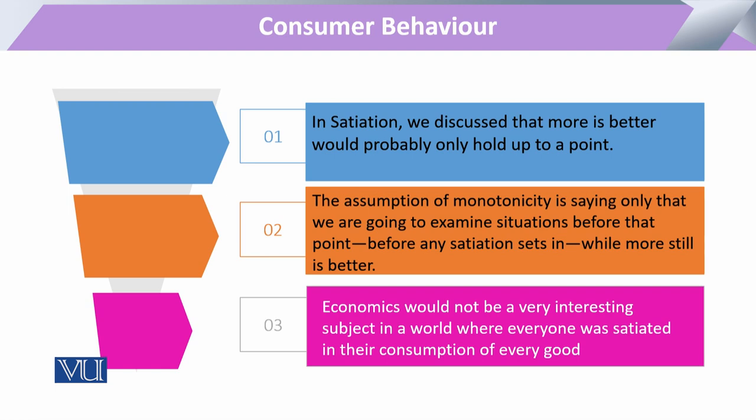The consumer will reach towards the proper point of satiation or the bliss point. The property of satiation and the property of monotonicity are both equally indispensable for following the rules of the indifference curve. Without the presence of one, the other cannot be expressed. In economics, everyone will be satiated in their consumption of every good, but only for a very little time and at a very particular point.